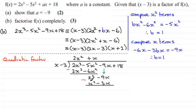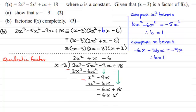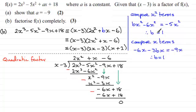Multiply x by x minus 3 to get x squared minus 3x. Subtract: the x squared terms cancel, leaving minus 9x minus minus 3x, which is minus 6x. Bring down the last term, plus 18. What do we multiply x by to get minus 6x? It's minus 6. Minus 6 times x minus 3 gives minus 6x plus 18. Subtract and everything cancels — remainder zero — confirming x minus 3 is a factor, and giving us the quadratic factor 2x squared plus x minus 6. So that's an alternative method; whichever one you decide to use.